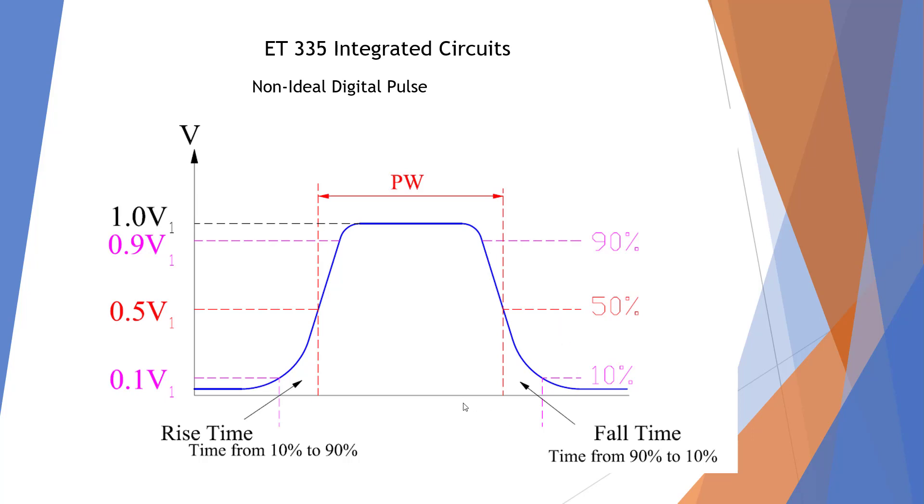So what we have here is the definition. We have rise time going from 10% to 90%. Fall time is going from 90% down to 10%. The pulse width we're going to measure at the 50% point. So these are the measurements that we'll be doing.